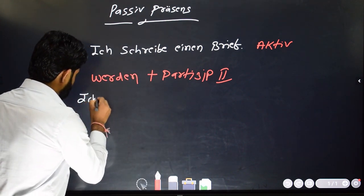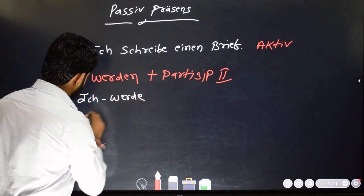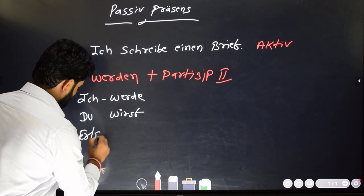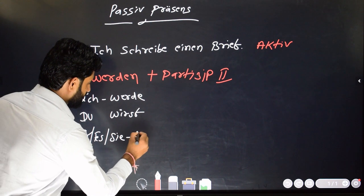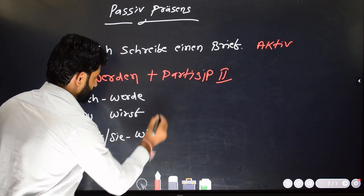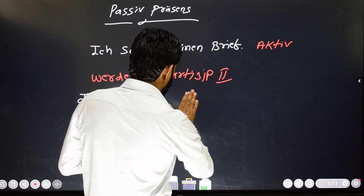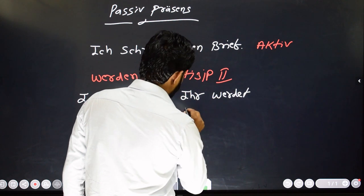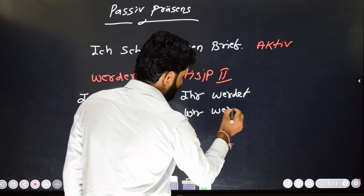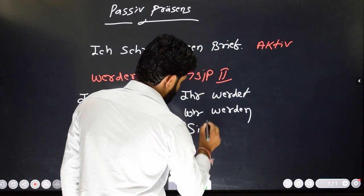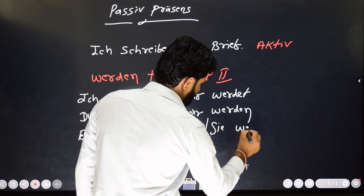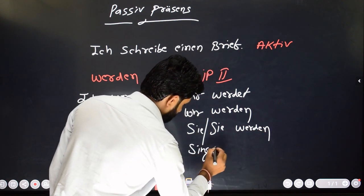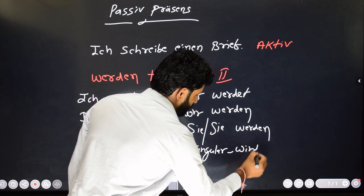Now let's see the conjugated form of 'werden.' With 'ich' it is 'werde', with 'du' it is 'wirst', with 'er/sie/es' it is 'wird', and with 'wir', 'ihr', 'sie', and 'Sie' it will be 'werden.' With plural it will also be 'werden', and with singular it will be 'wird.'